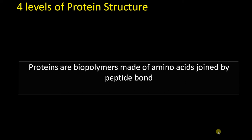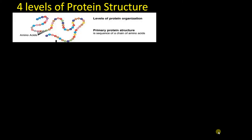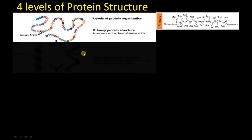There are four levels of protein structure. Let's begin with a quick summary for better understanding. The primary protein structure is simply a linear chain of amino acids joined by peptide bonds.